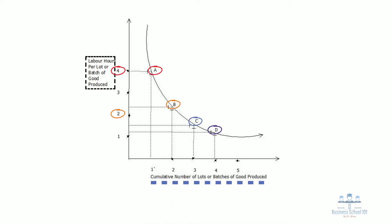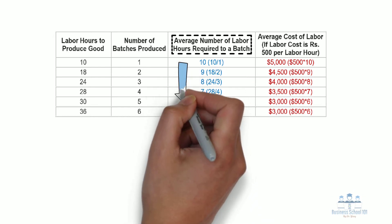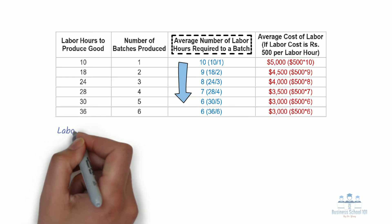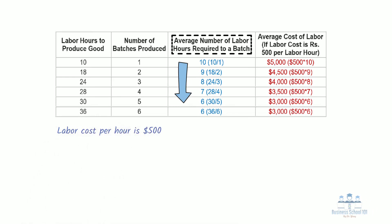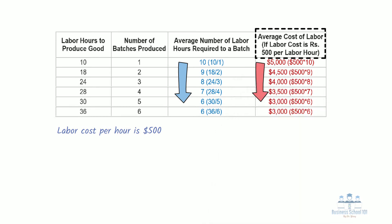The learning curve effect can be further explained by using the following data table. From the table, it is clear that the average number of hours required to produce a batch of a particular good, say X, is going down on account of the learning curve effect. If we assume that the labor cost per hour is $500 and stays fixed, then the average cost of labor required to produce a batch of good X goes down on account of increased output from the same labor hour input. Thus, the average labor cost per batch is going down from $5,000 to $3,000 by the time the company is producing the sixth batch of good X, and this happens on account of the learning curve effect.